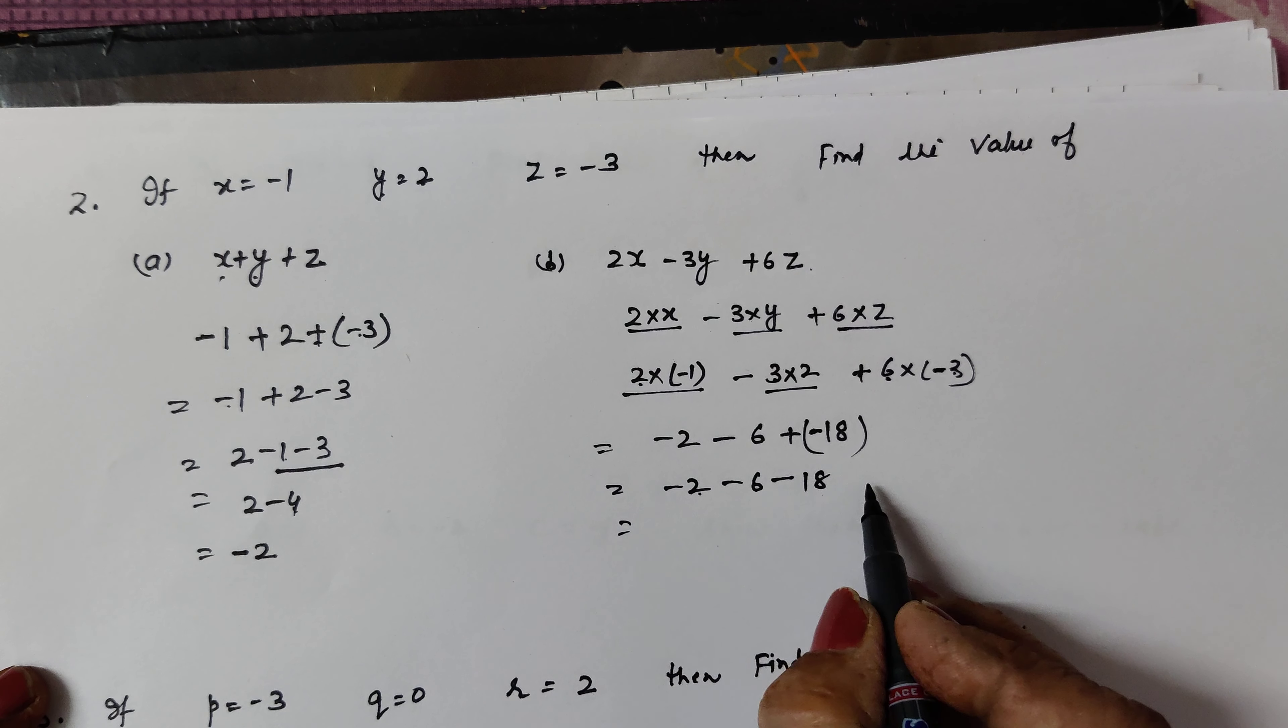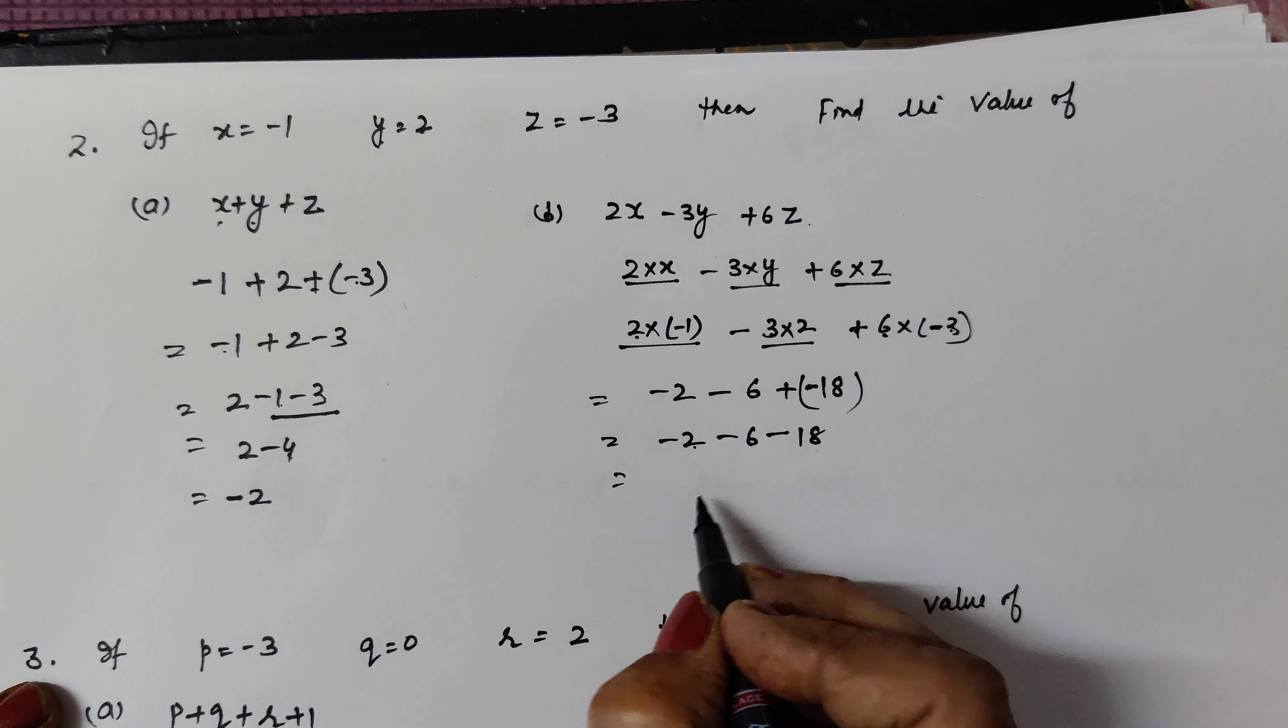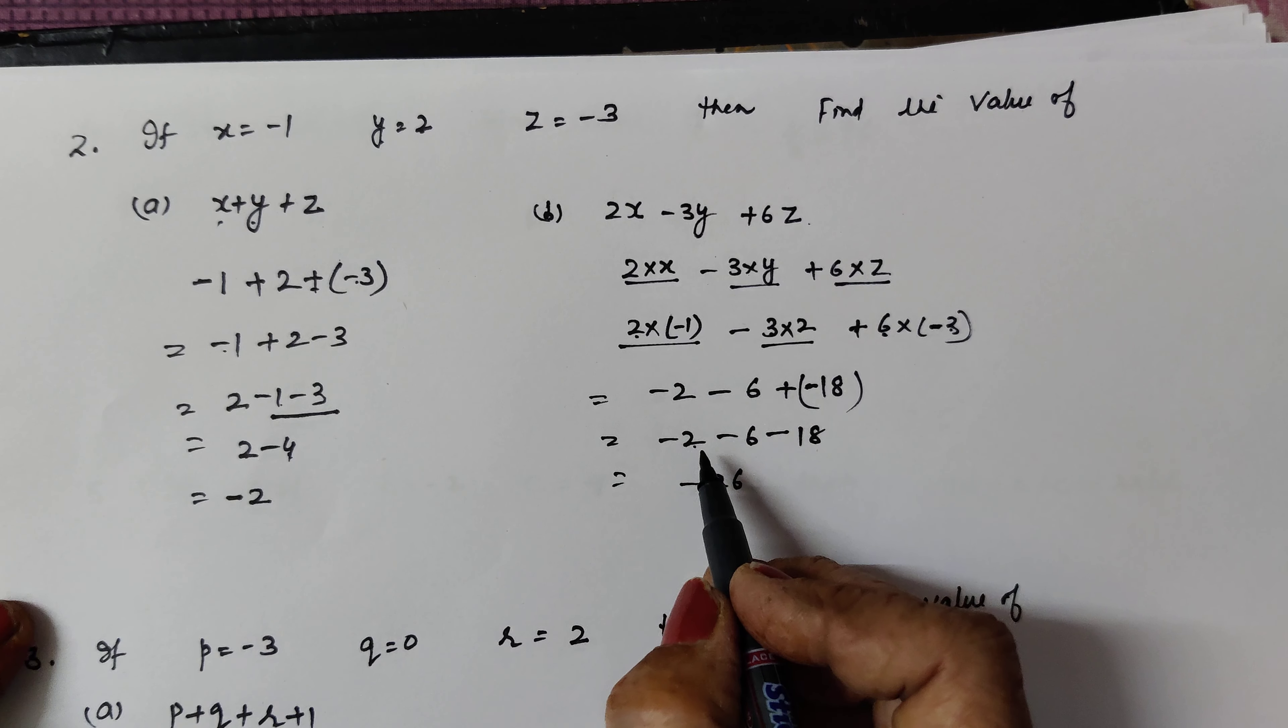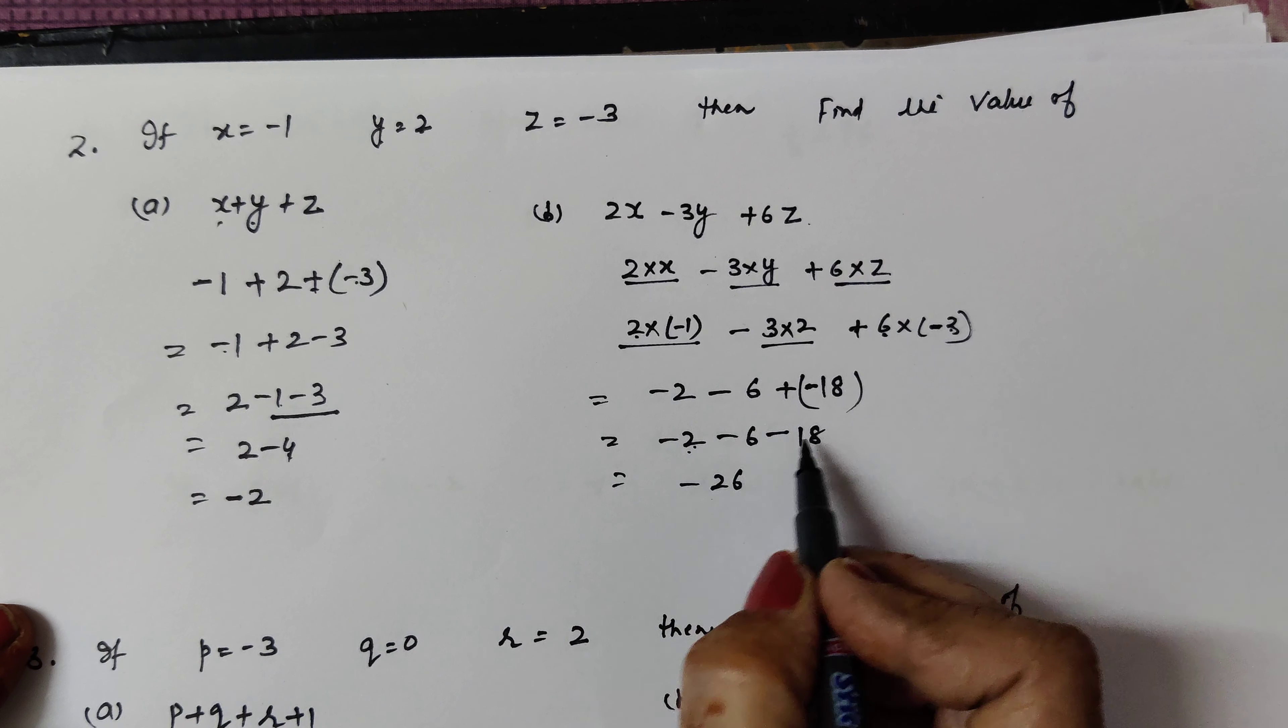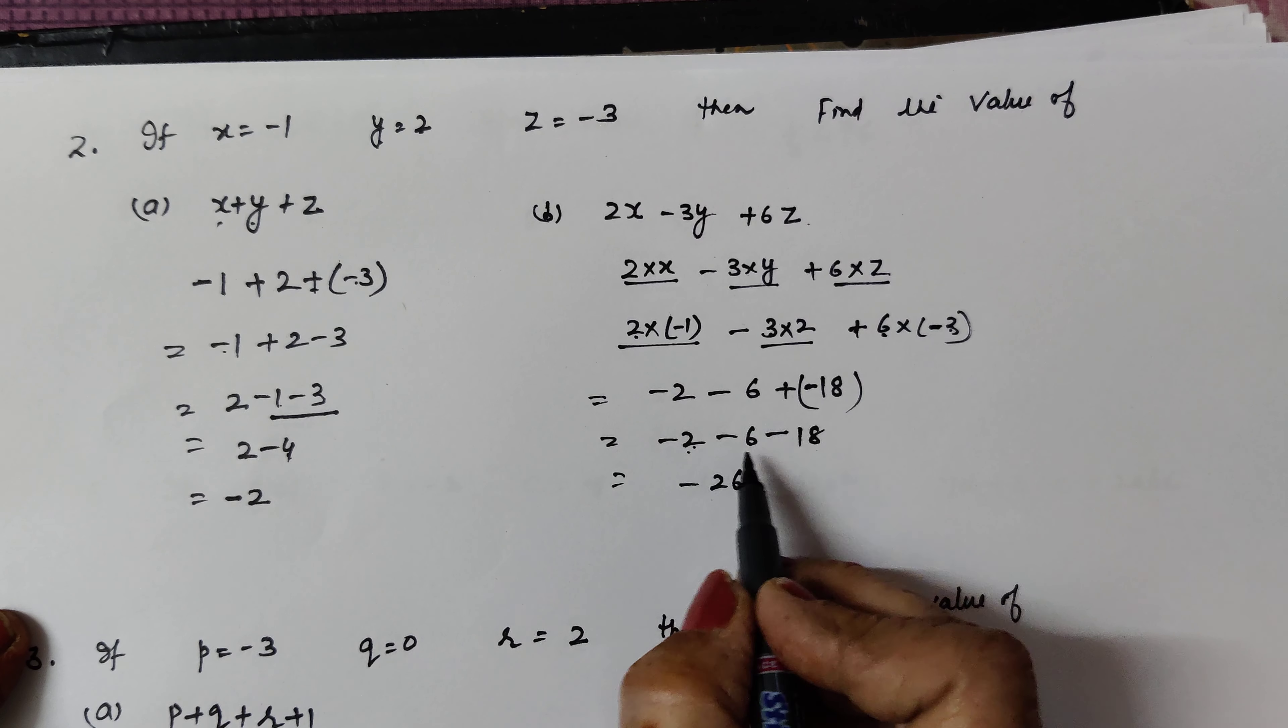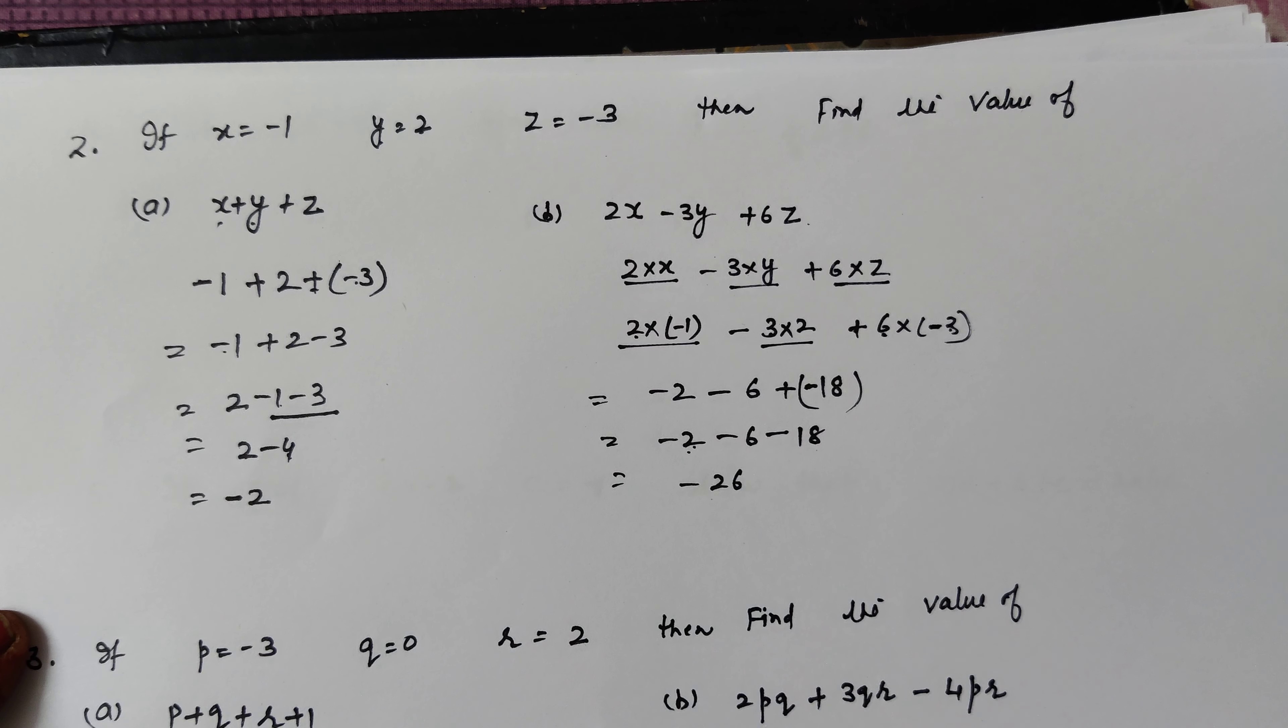Now see, 2 is negative, 6 is negative, 18 is negative. All are same sign, add all the numbers, 6 plus 2 is 8, 8 and 18 is 26. Where all signs are same, same sign numbers add, sign same. So negative, negative, negative, all are same, add all, and sign same means negative sign. So now we continue.